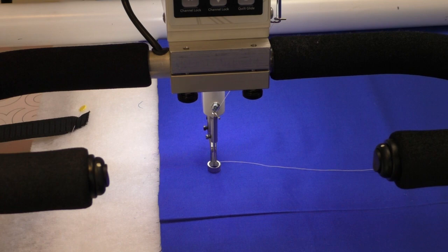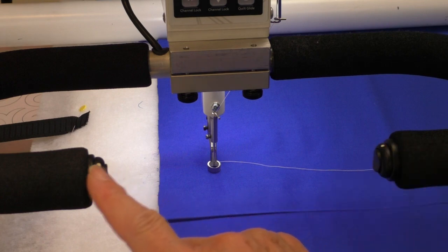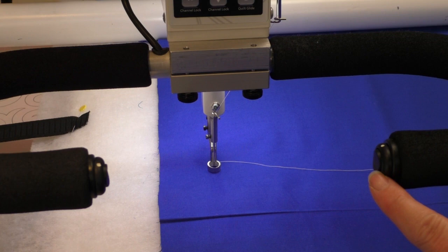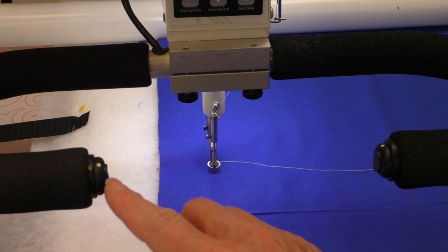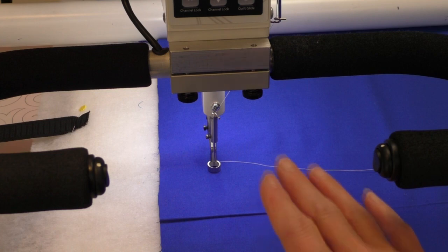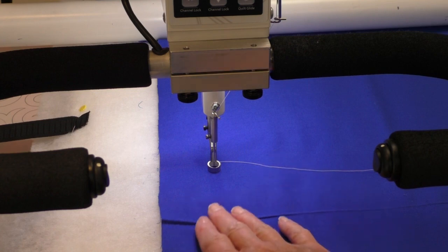APQS long arms come with a single stitch button built into both the right and the left handles. So lefties like me, along with right-handed people, have easy access to the controls, along with the toggle switch that starts and stops the machine. So I can easily control the machine, no matter which hand I need to use to adjust or stabilize the fabric.